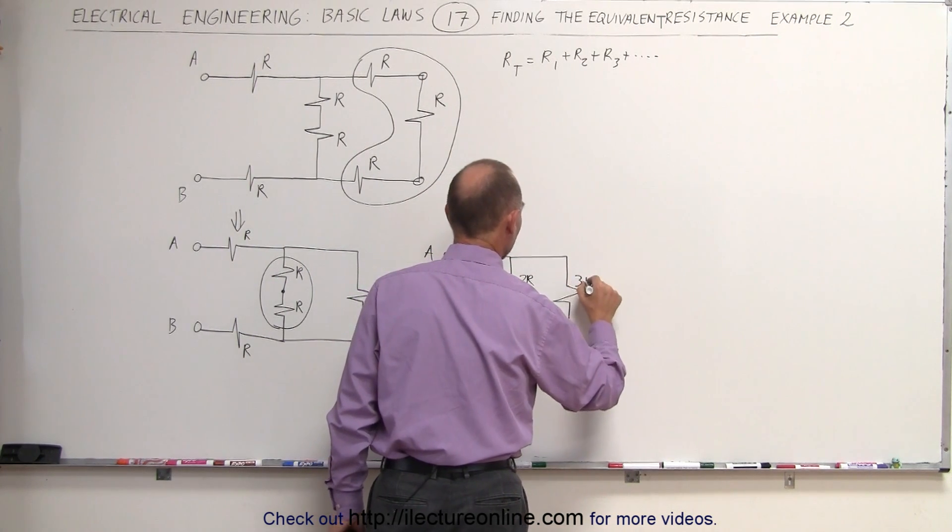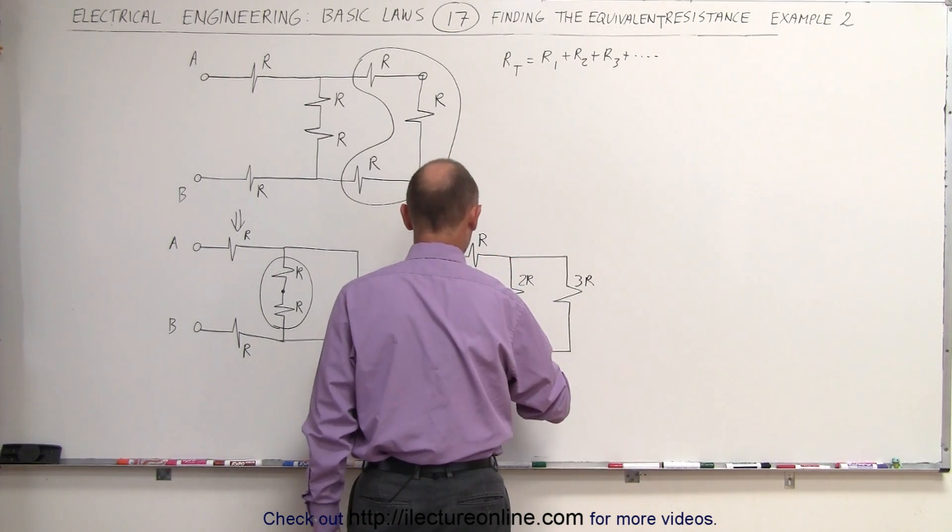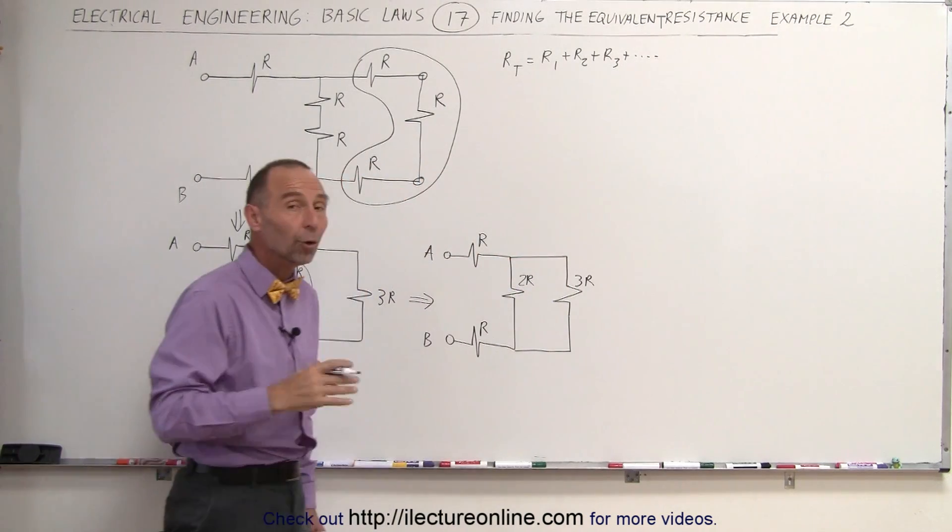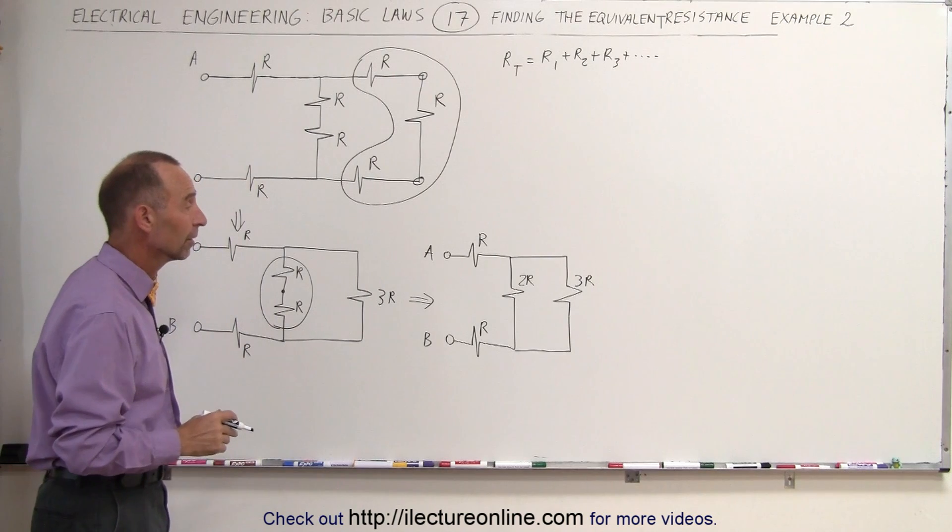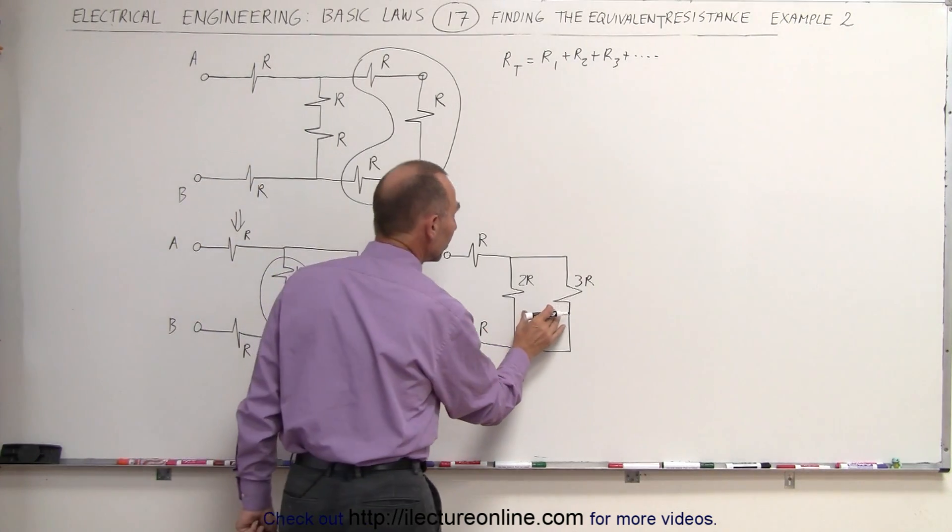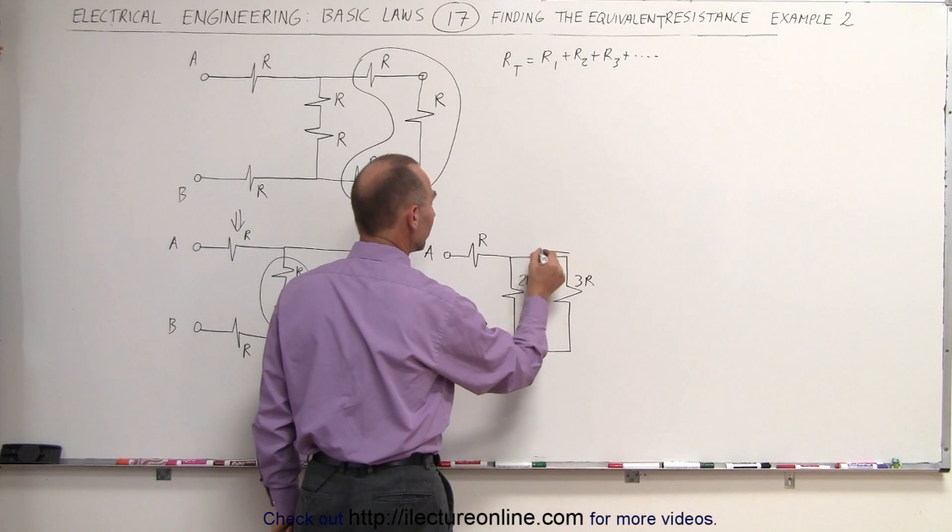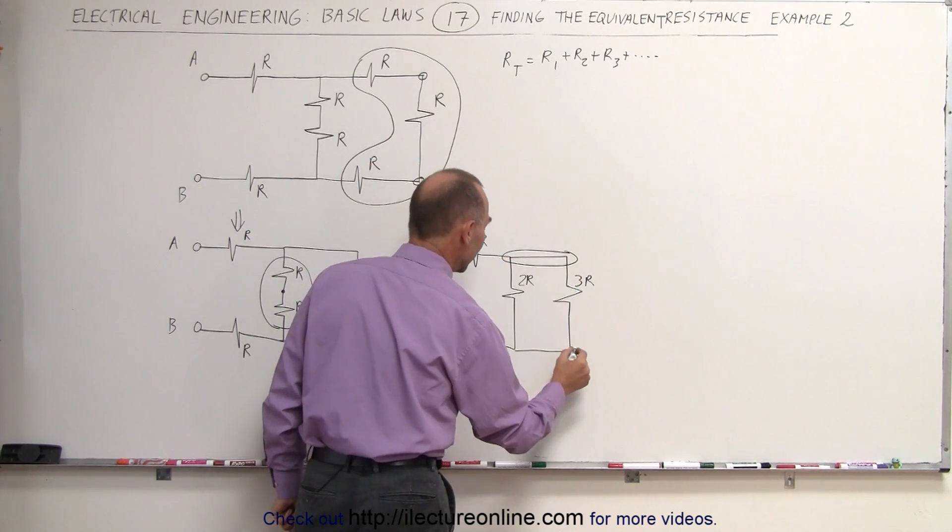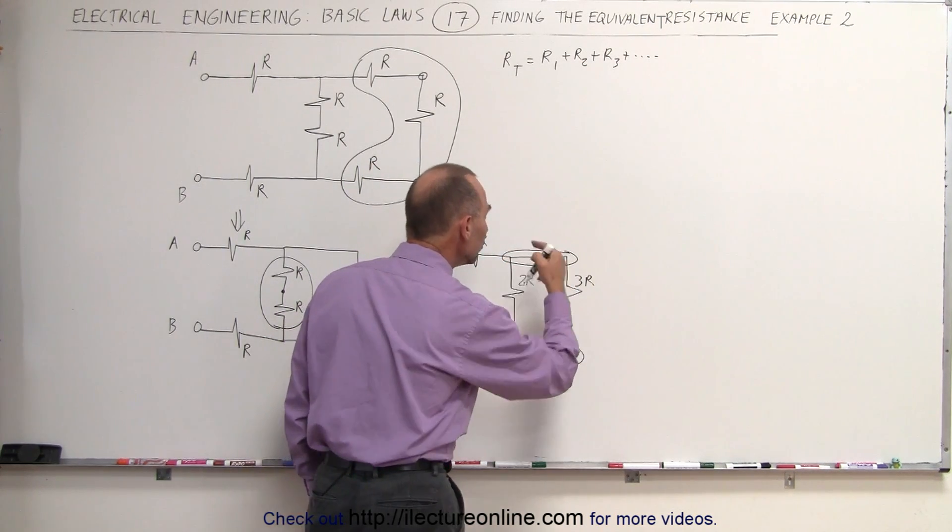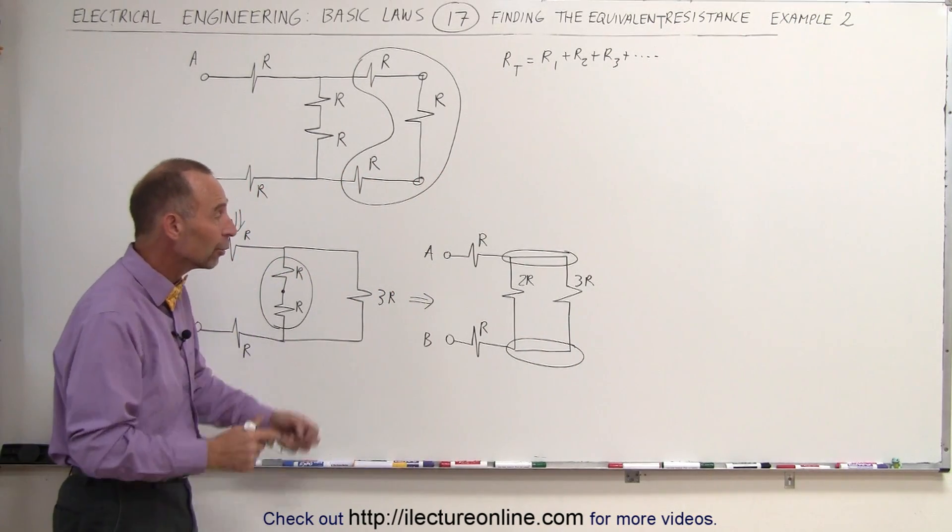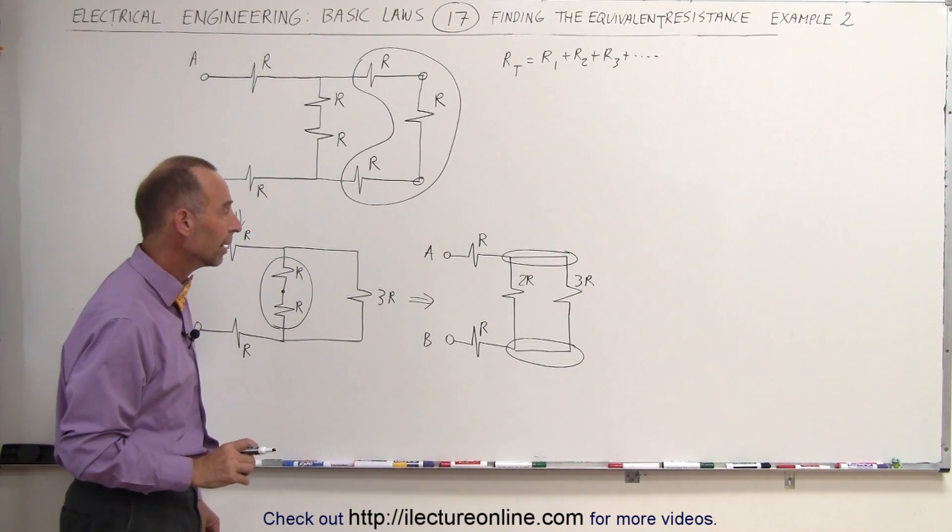2R, 3R, R, and R. Remember that R is some value in ohms. We don't know what that value is. Now we have those two resistors, and they are in parallel. The reason why we know they are in parallel is because they share this node, and they share this node. They share a node on each side of the resistor, on each end of the resistor. Therefore, those are in parallel.